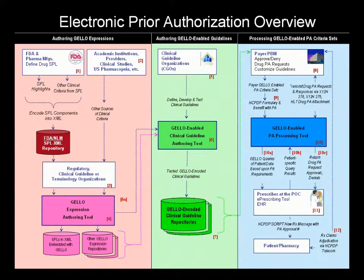Processing the Jello-enabled prior authorization criteria set at the point of care and adjudicating the PA request with the payer or pharmacy benefit manager. We will now go over each of these steps in greater detail.